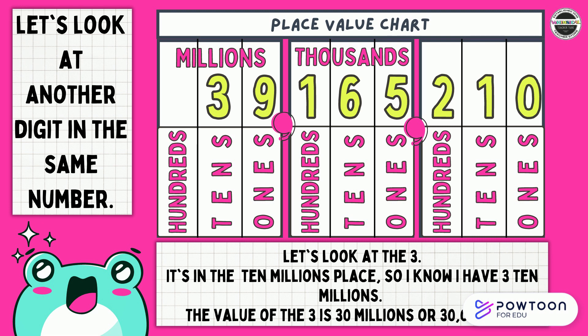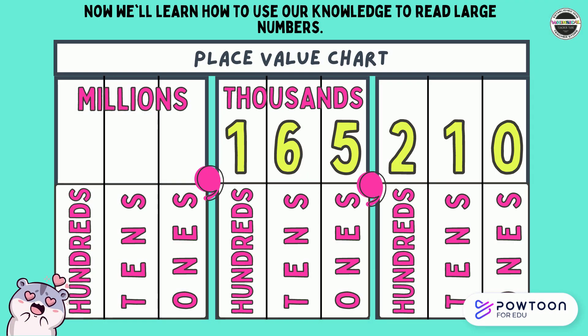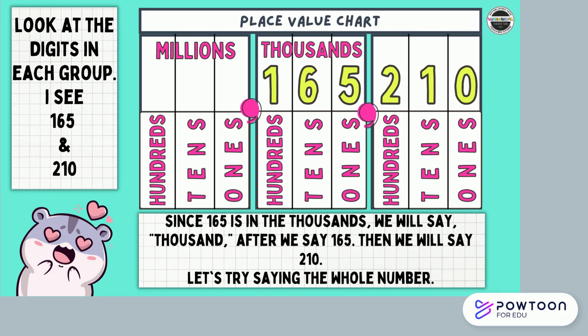Pause to tell your partner what you would do if you had 30 million dollars. Now we'll learn how to use our knowledge to read large numbers. Look at the digits in each group — I see 165 and 210. Since 165 is in the thousands, we will say thousand after we say 165. Then we will say 210. Let's try saying the whole number: 165,210.